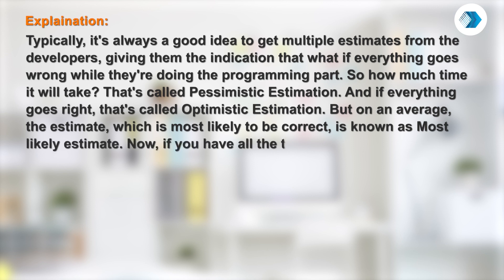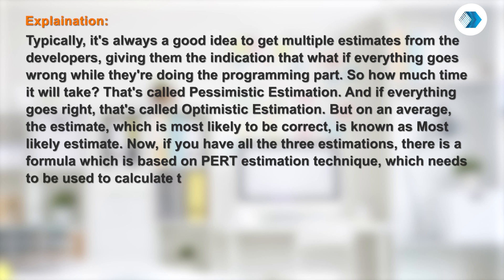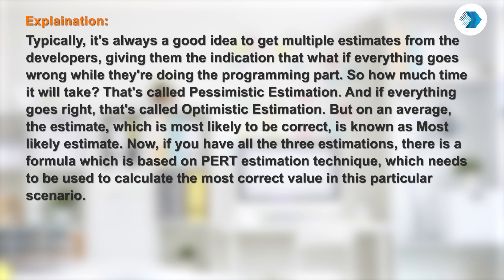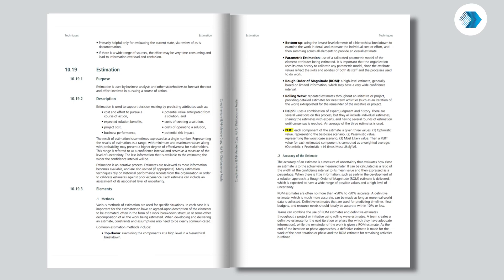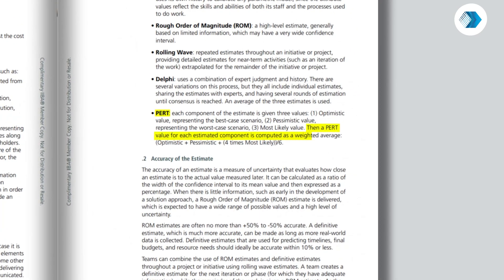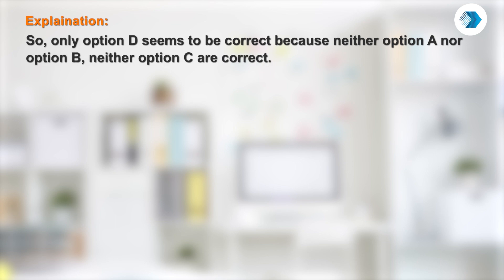Now, if you have all three estimations, there is a formula based on the PERT estimation technique which needs to be used to calculate the most correct value in this scenario. That formula is given in section 10.19.3, the estimation technique chapter. You can see the formula on this screen. Only option D is correct, because neither option A, nor option B, nor option C are correct.